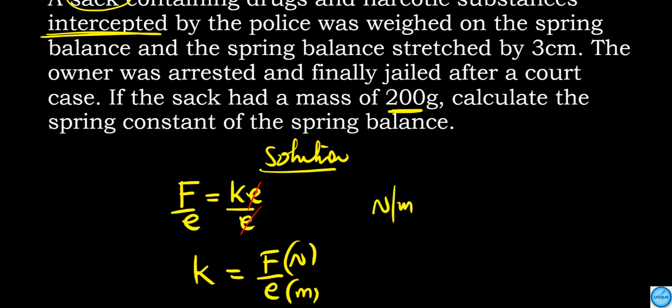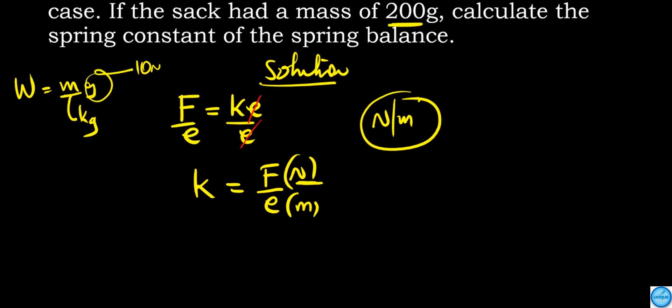So what we need to do, we need to find the weight. The weight is mass times acceleration due to gravity. So we need to do k equals our mass, which is 200 grams, divided by 1000 to get kilograms, which gives 0.2 kg, times 10 m/s².